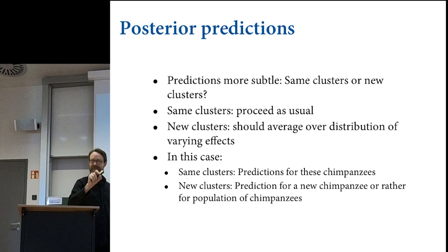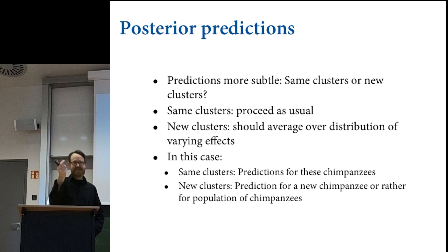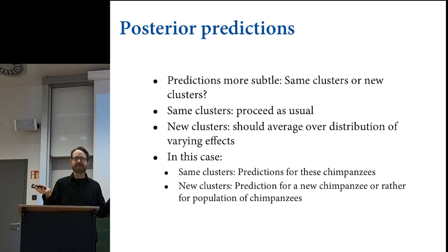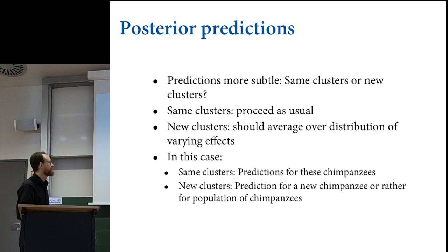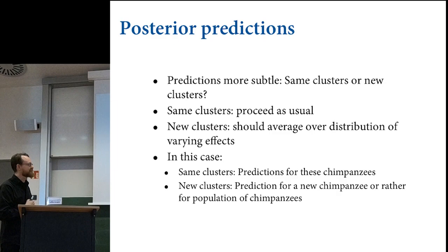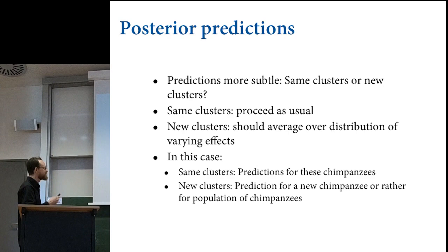If you were going to make predictions for the same clusters, you proceed as usual and get to use the varying intercepts. This does happen a lot—if your cluster is a country, you want to use the varying intercept for that country. But in many cases, like the chimpanzee experiment, we're not interested in making predictions about those specific individuals. The varying intercepts for their handedness preferences help us understand the treatment effects—they create experimental noise we need to control for—but if we want predictions for a new group of participants, we'd care about the distribution of handedness tendencies.